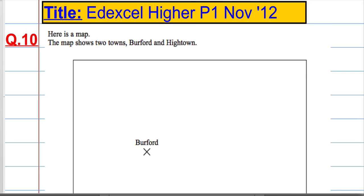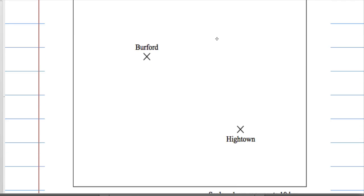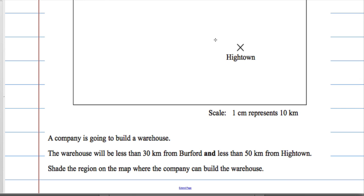Okay, so question 10 is another loci question, and these questions tend to be quite popular in the Edexcel exam. So we've got a map, and the map shows two towns, Burford and Hightown. Not too sure how real these places are, but however, it tells us that the scale is 1 cm for every 10 km.